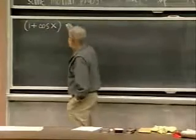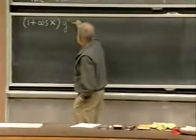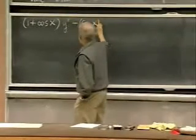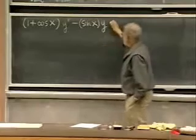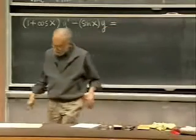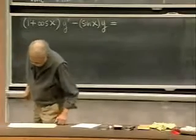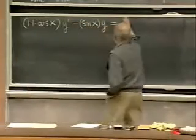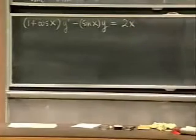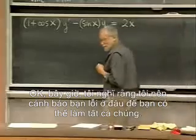Trick question. Y prime minus sine x times y is equal to 2x squared — very exciting.